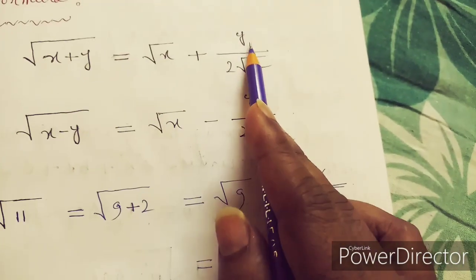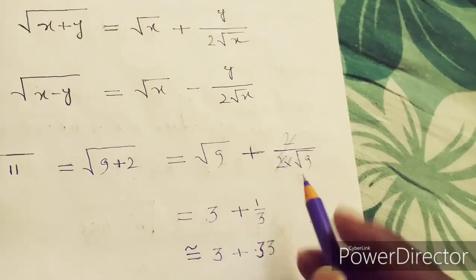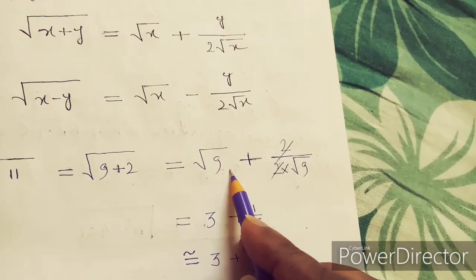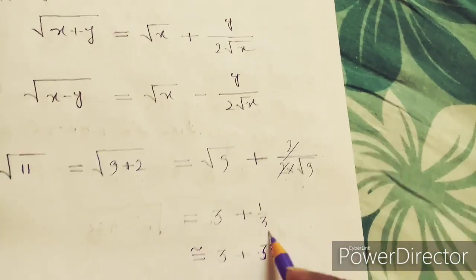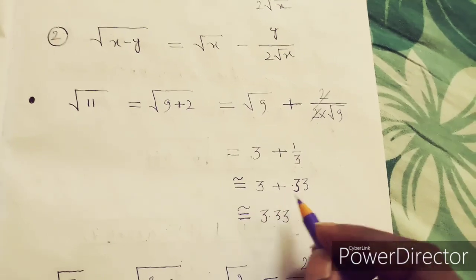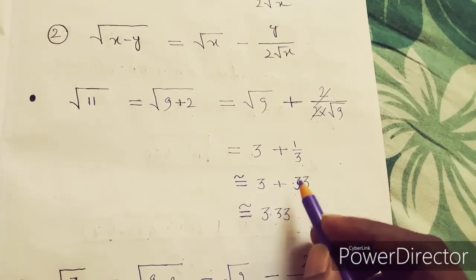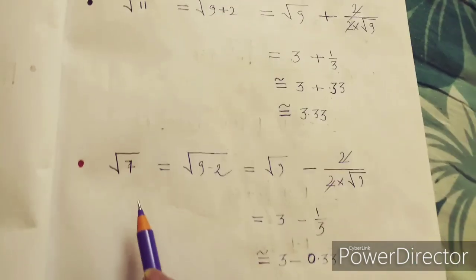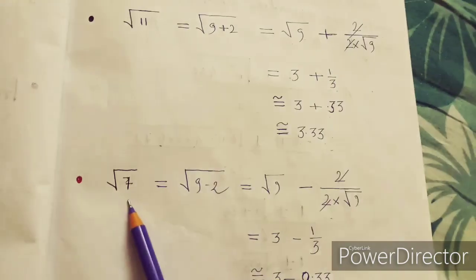In this formula, y is 2, so we put 2 here: y/(2√x) = 2/(2×√9). The 2s cancel out, giving 1/√9 = 1/3 ≈ 0.33. So √11 ≈ 3 + 0.33 = 3.33.